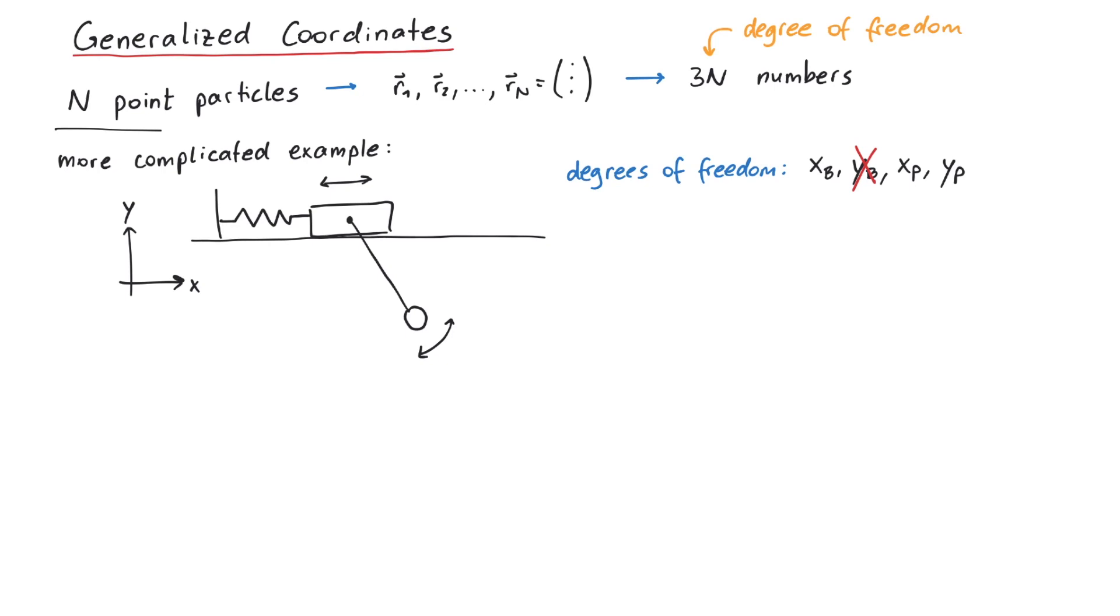And what about the pendulum? Do we really need 2 numbers to specify its position? The answer is no, because at any given x position, the y position is uniquely determined, since the length of the pendulum is fixed.